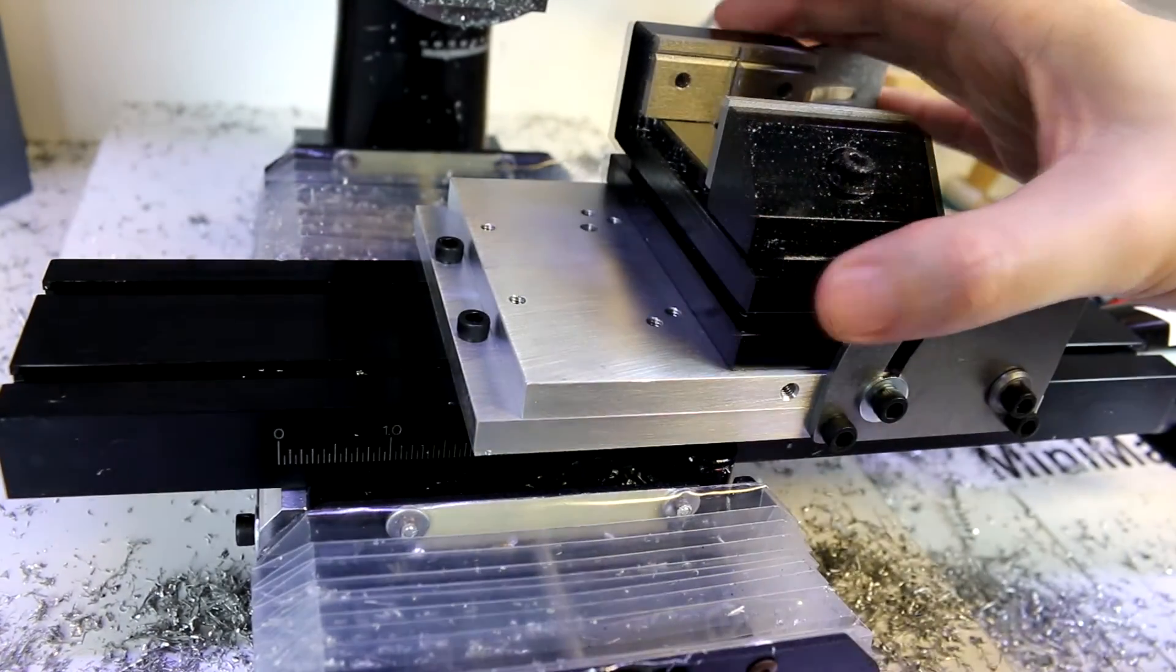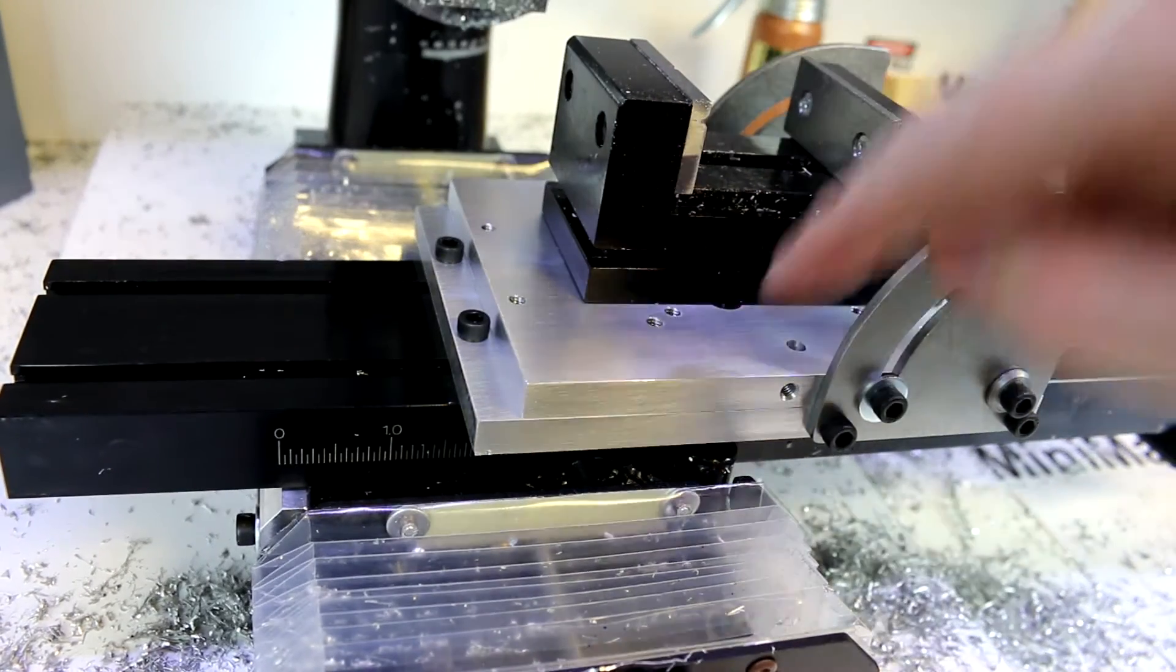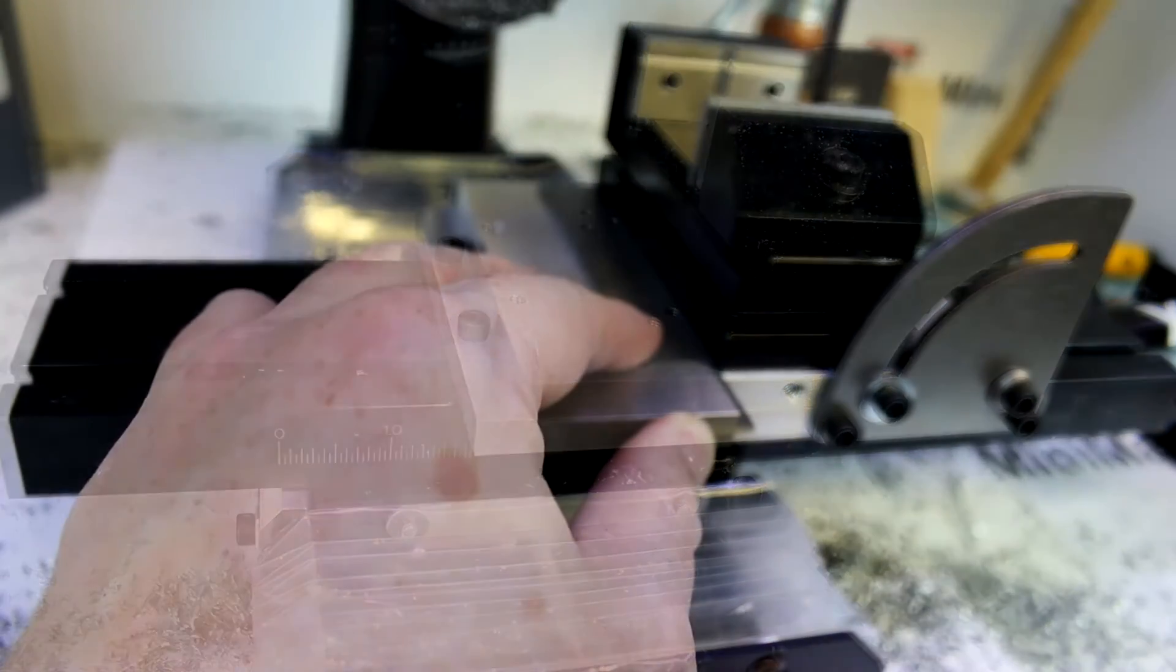So the vise will mount like so. We can also mount it in this direction if we wish, and there are holes pre-drilled in the base for both of these. And we're going to give it a rough squaring.